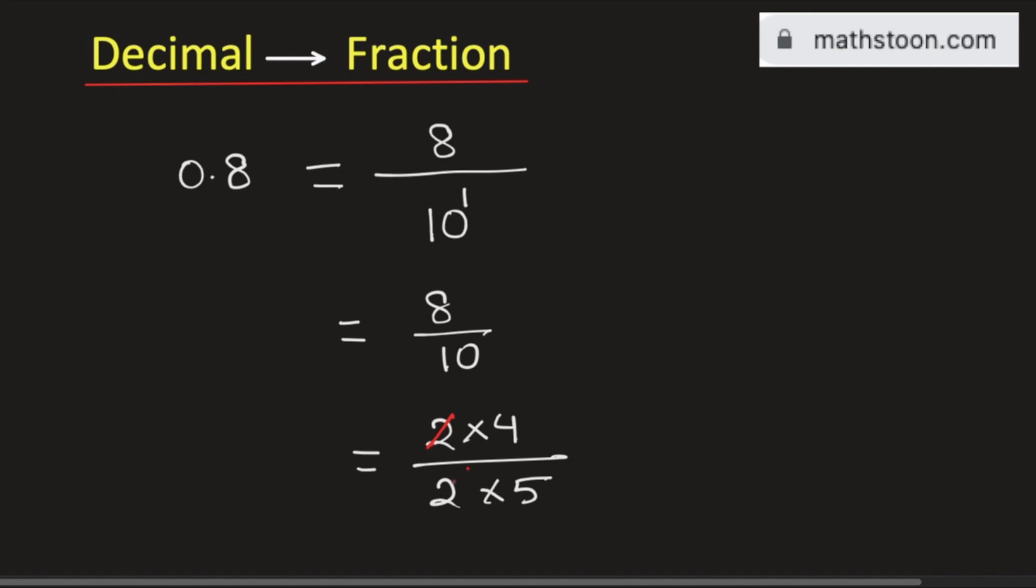Now see that 2 and 2 get cancelled and we are left with 4 divided by 5. So 4 over 5 is the desired fraction corresponding to 0.8, and this is our final answer.